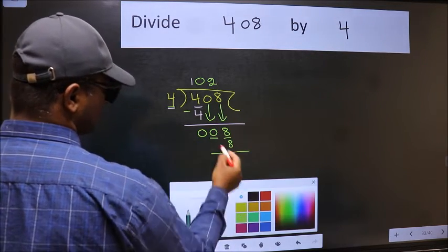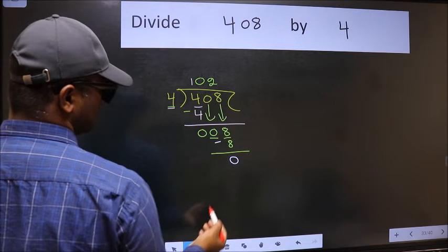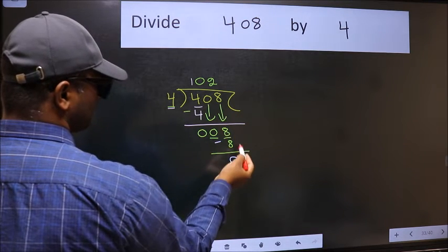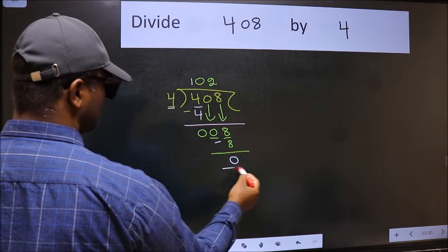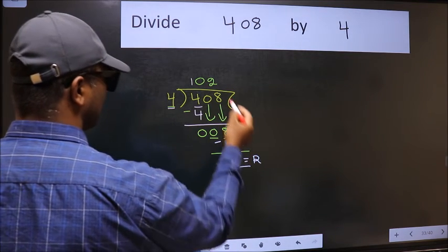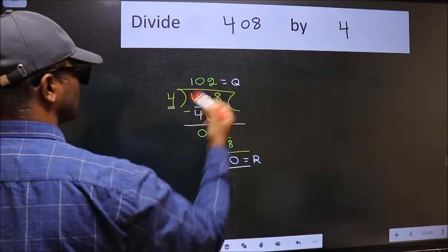Now we should subtract. We get 0. No more numbers to bring down, so we stop here. This is our remainder and this is our quotient.